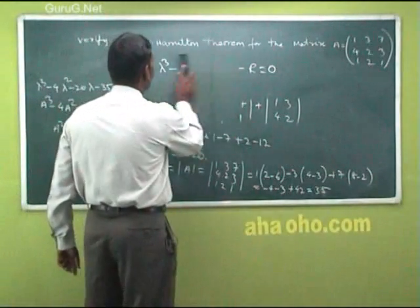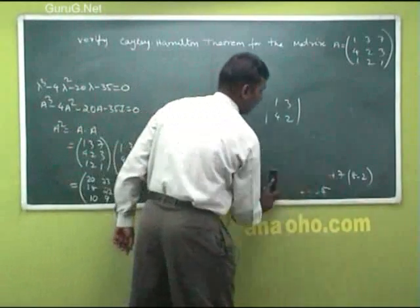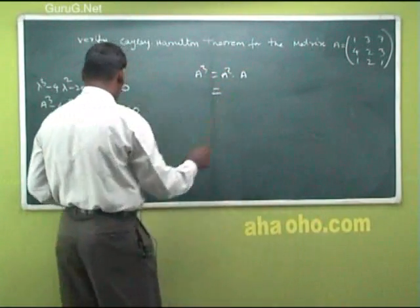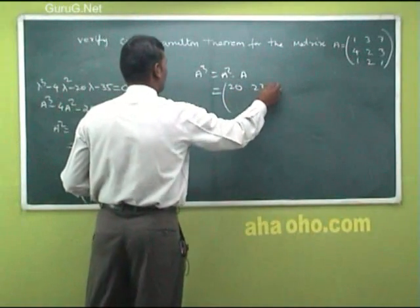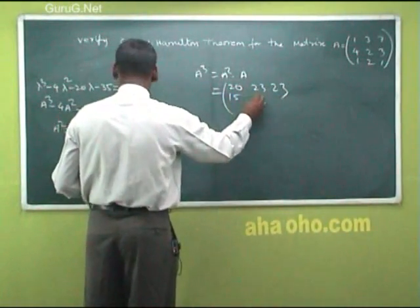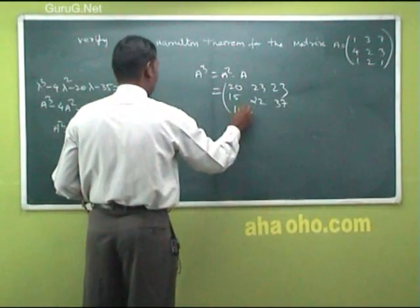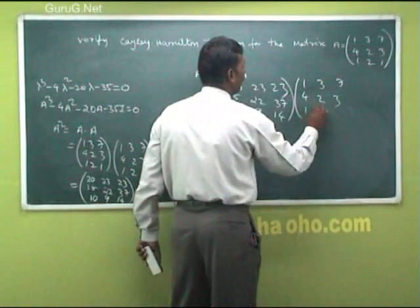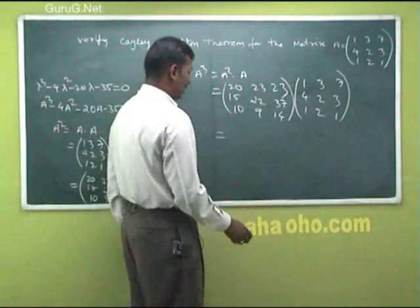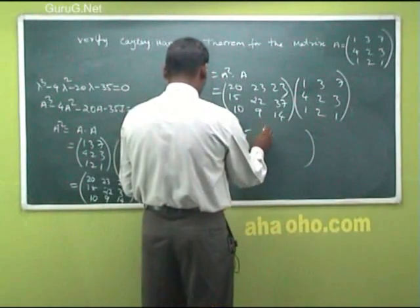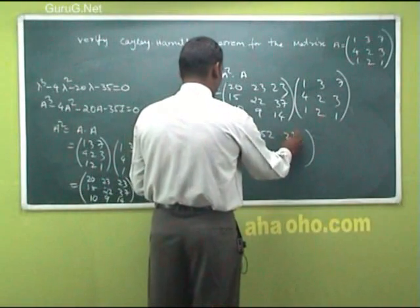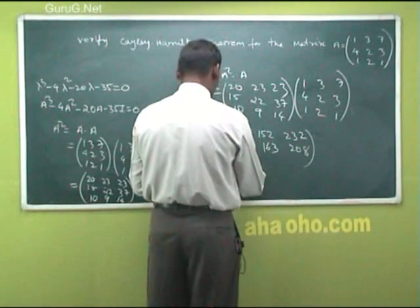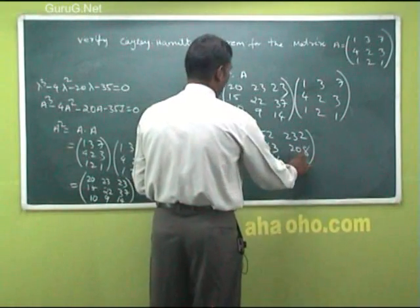Next, A cubed equals A squared into A. Multiplying A squared = [20,23,23; 15,22,37; 10,9,14] by A = [1,3,7; 4,2,3; 1,2,1] gives A cubed = [135, 152, 232; 140, 163, 208; 60, 76, 111].